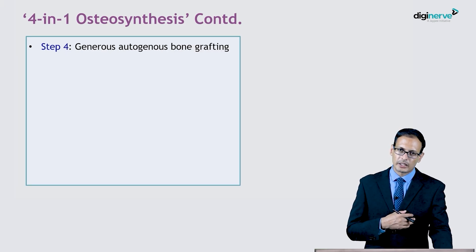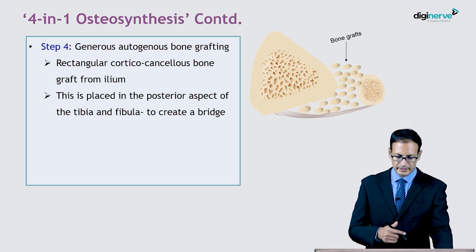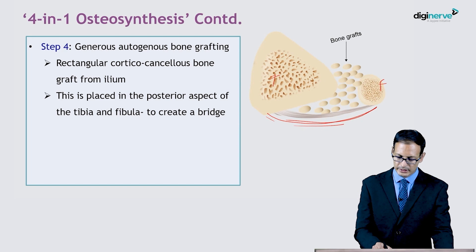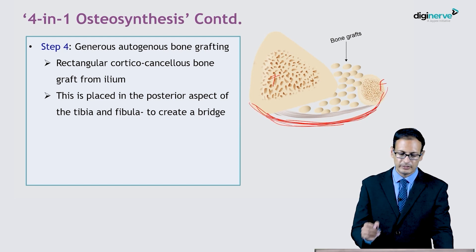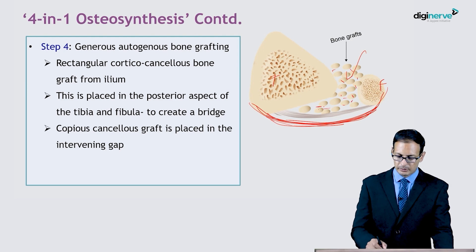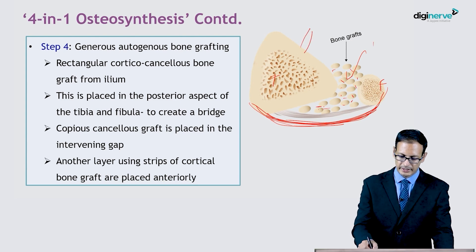Step 4 involves generous bone grafting — the most important step. A rectangular corticocancellous graft may be taken from the inner table of the ilium and placed along the posterior border of the tibia and fibula, spanning both bones. Then a copious amount of cancellous bone graft is placed in this area. The whole area is filled because we are trying to achieve cross union. Another layer of cortical bone graft is placed anteriorly.